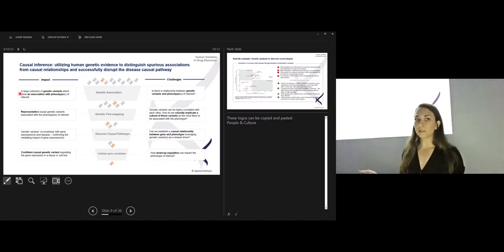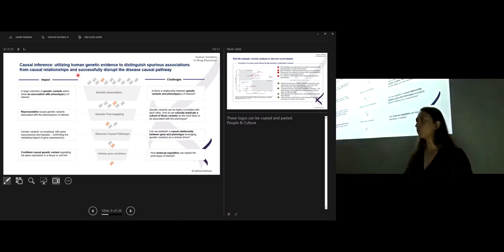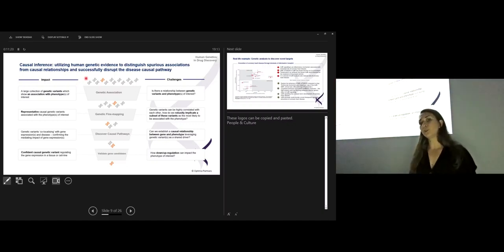So how do these causal inference methods work? The aim of the causal inference methods in combination with GWAS data aim to utilize the human genetic evidence so that you can essentially distinguish between spurious associations and actual causal associations. If you think about the linear or logistic regression, the only thing that they tell you is a correlation. So you identify whether a gene is correlated to a disease, but you don't know whether that relationship is a causal one, and it could very easily also be a false positive one. So causal inference tools aim to disrupt the causal pathway by adding additional evidence to the GWAS findings in order for you to identify potential drug candidates.